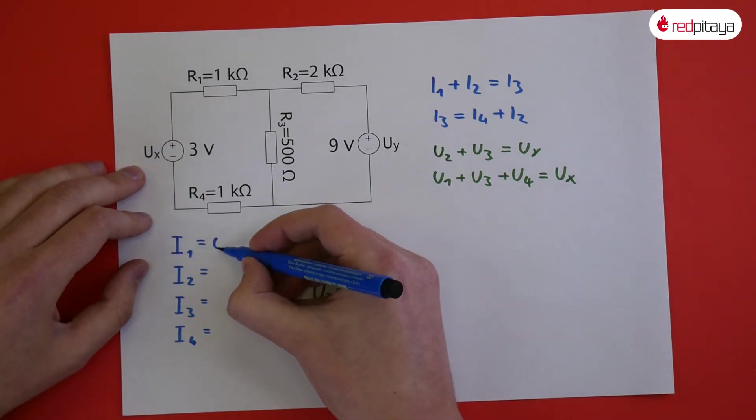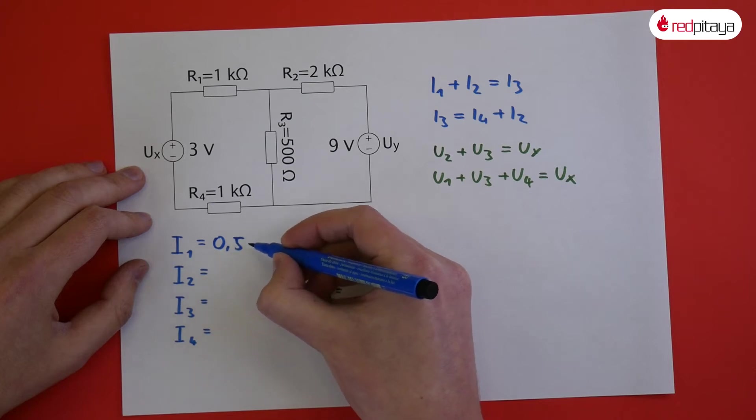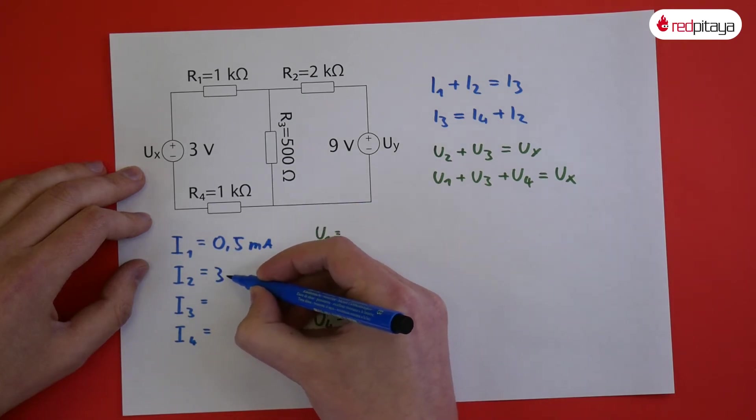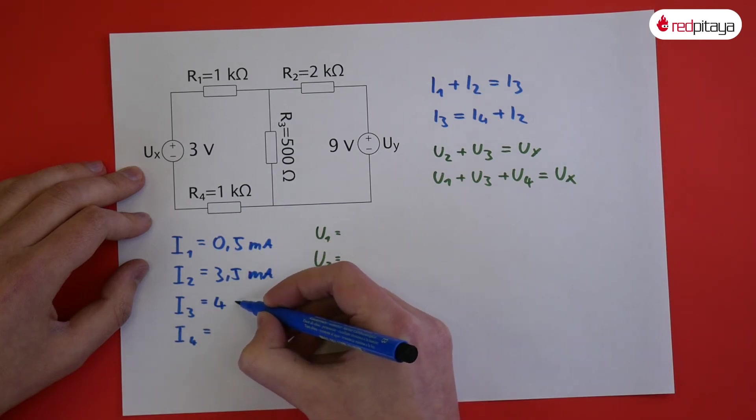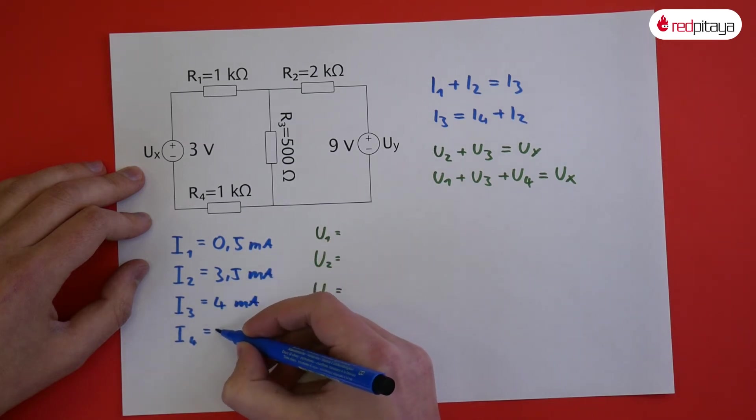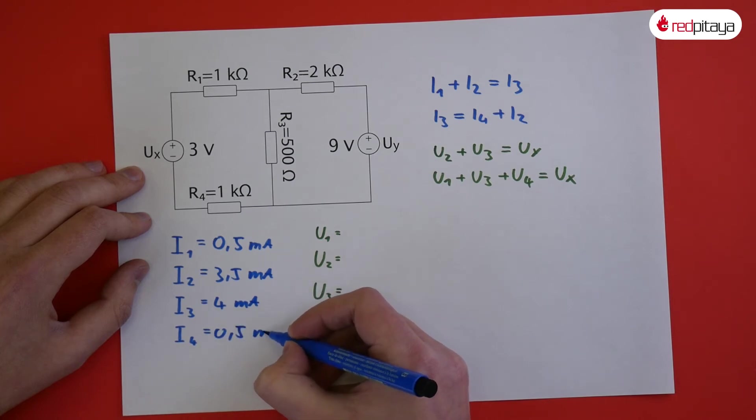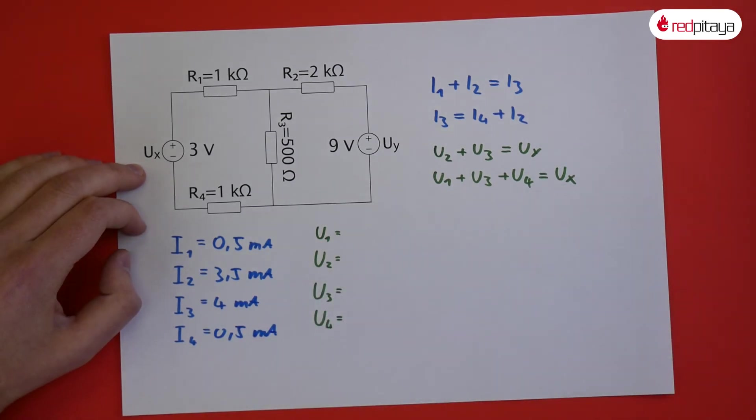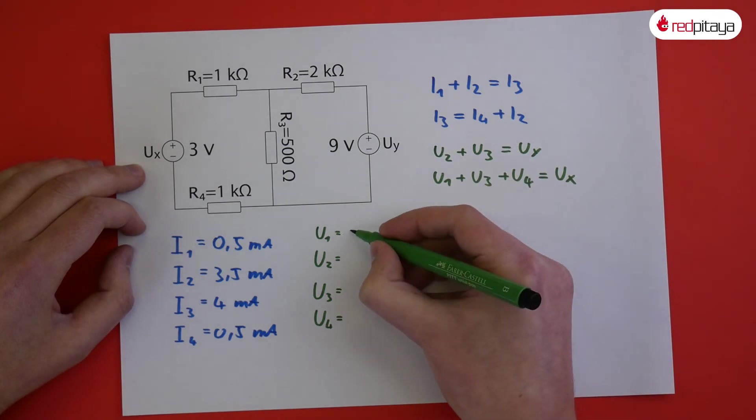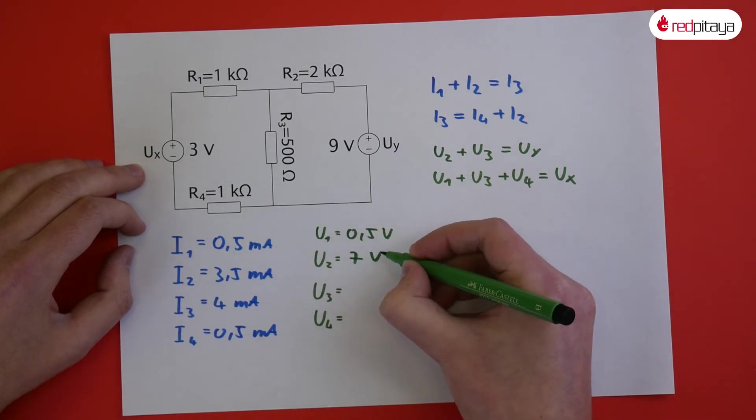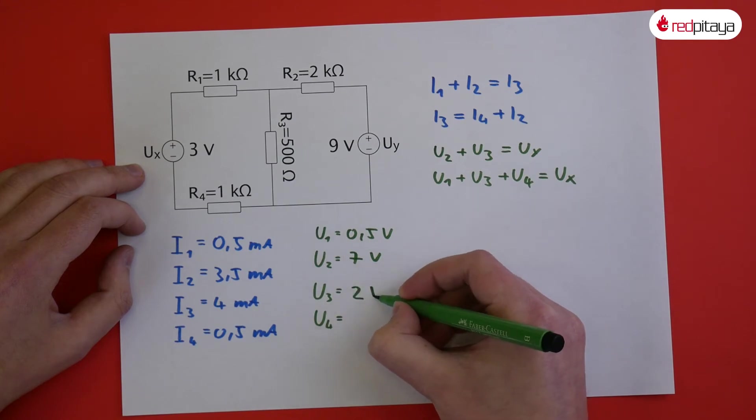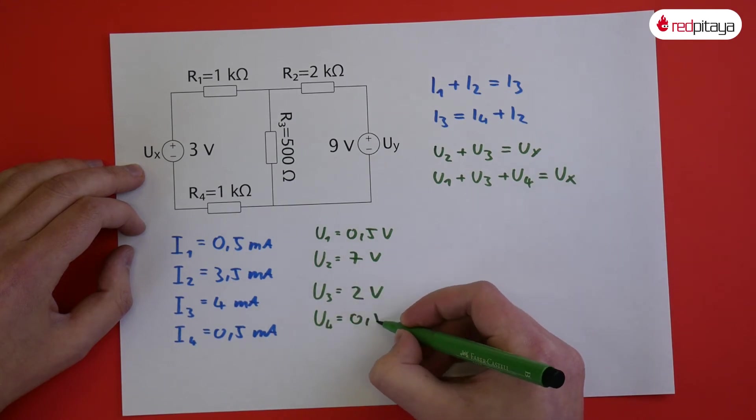The currents are 0.5 mA, 3.5 mA, 4 mA and 0.5 mA. The voltages are 0.5 volts, 7 volts, 2 volts and 0.5 volts.